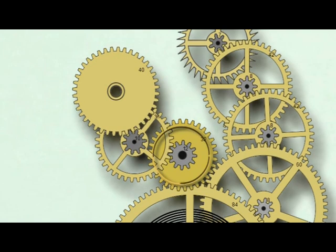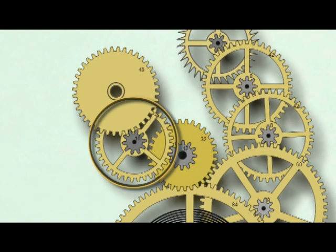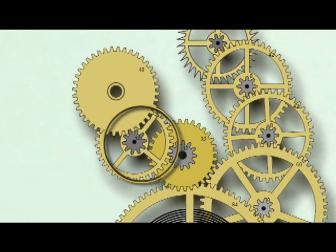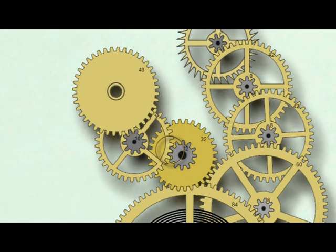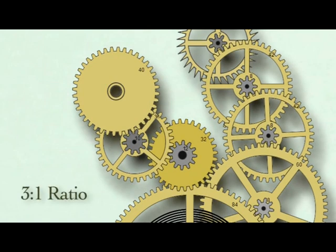This 12 leaf pinion on the center arbor is called the cannon pinion and it will make one revolution every hour along with the center wheel and arbor. This 36 tooth transfer wheel to the left is engaging the 12 tooth cannon pinion. The cannon pinion will have to turn three times for the 36 tooth transfer wheel to rotate once, so the ratio of the cannon pinion to the transfer wheel in the motion works is 3 to 1.